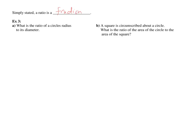Simply stated, a ratio is a fraction. For example three, what is the ratio of a circle's radius to its diameter? You're looking at R over D. You know that D is equal to 2 times R. Now you have a fraction you can simplify — the R's cancel out. Make sure you do not write 2 as your answer. It's 1 over 2. That's what the ratio simplifies to.